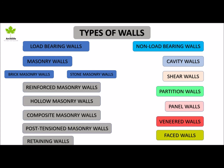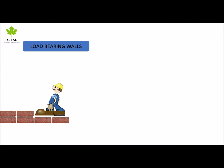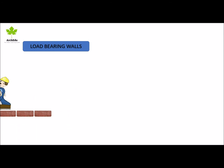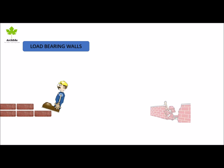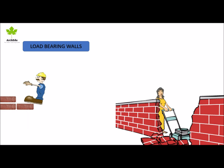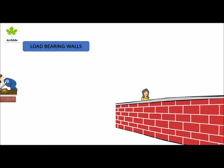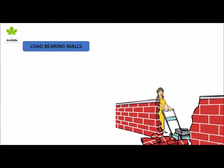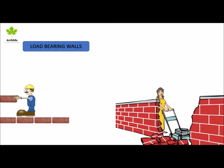Load-bearing wall: a load-bearing wall is a structural element. It carries the weight of a structure from the roof and upper floors to the foundation. It supports structural members like beams, slabs, and walls on above floors. This wall is exactly over one another on each floor and is designed to carry the vertical load.